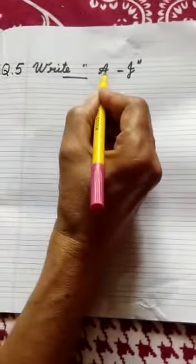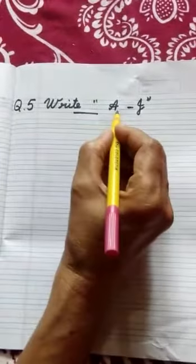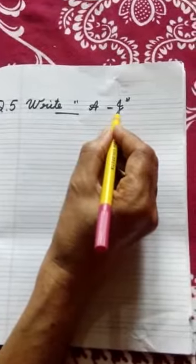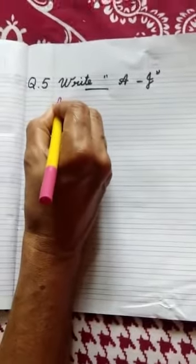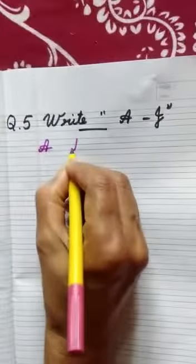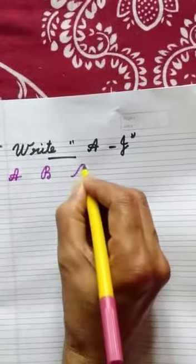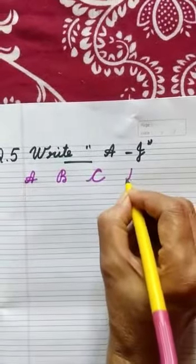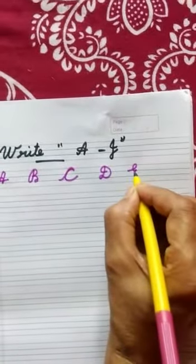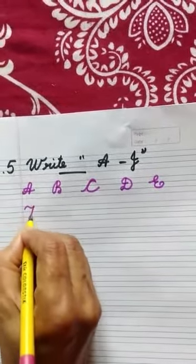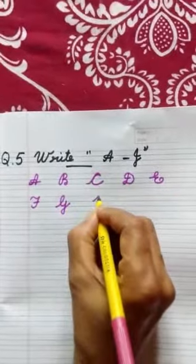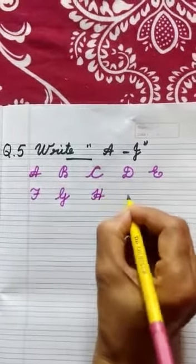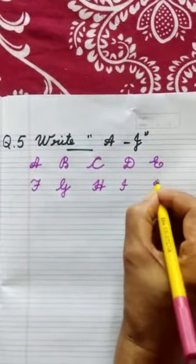Question number 5: write A to J. We should write only 5 letters in a line. Start from A: A, B, C, D, E. Next line: F, G, H, I, J.